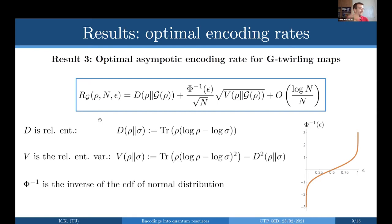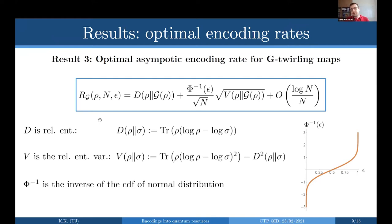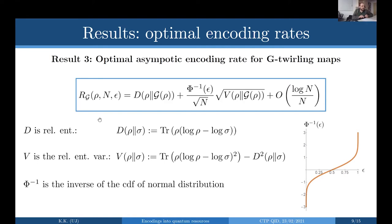Think of it this way: I give you a floppy drive — that's your state rho — and I tell you that you cannot do any kind of encoding, only some constrained kind. How much information can you encode on this floppy drive? For example, if you have a qubit and can only rotate around the z-axis: if I give you the eigenstate of z you can't get anywhere, but if I give you |+⟩ you can go from |+⟩ to |−⟩ and encode two messages because they're orthogonal.